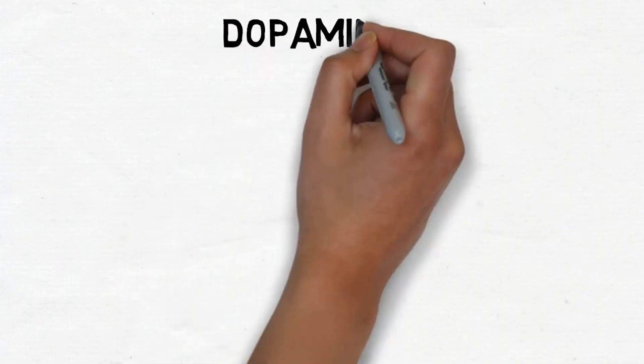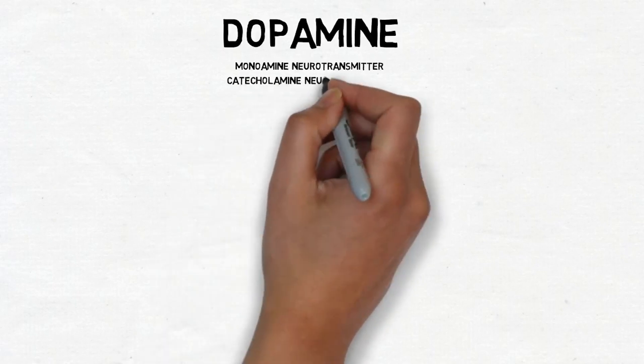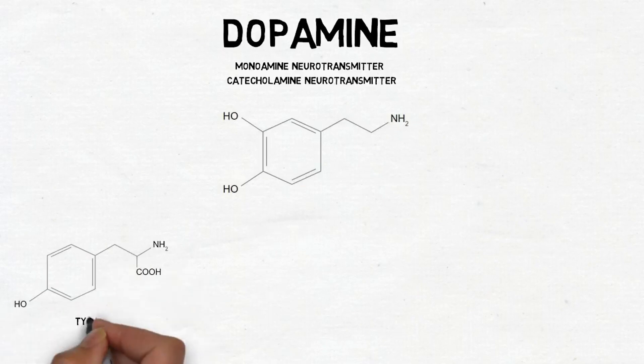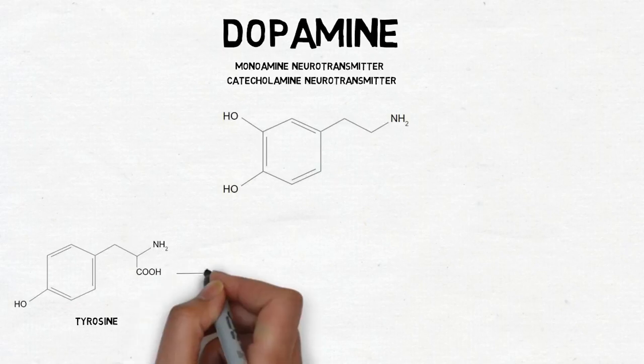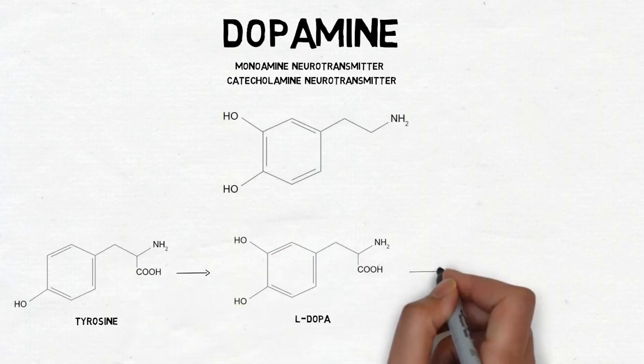Dopamine is a monoamine neurotransmitter, a term that refers to its chemical structure and the fact that it is derived from an amino acid. Dopamine is also a catecholamine, a term that refers to its chemical structure and the fact that it contains a catechol nucleus. To synthesize dopamine, the amino acid tyrosine is converted to L-dopa, and then L-dopa is decarboxylated to form dopamine.